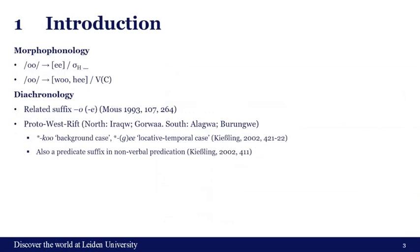The morpheme I'm looking at has two forms: 'o' and 'a' when it follows a high tone. There are also two other forms, 'wo' and 'he', which seem to have something to do with the vowel and consonant they follow, but I am not really sure about those environments exactly.